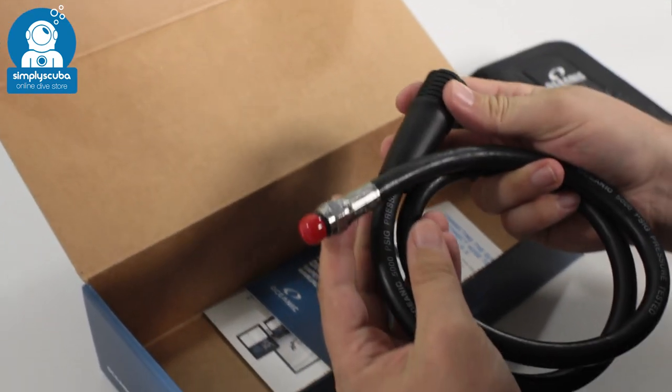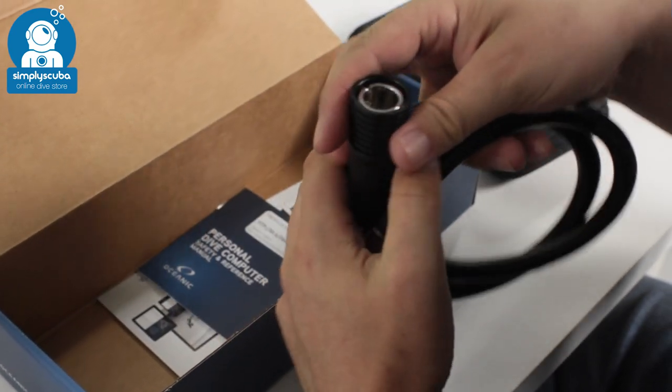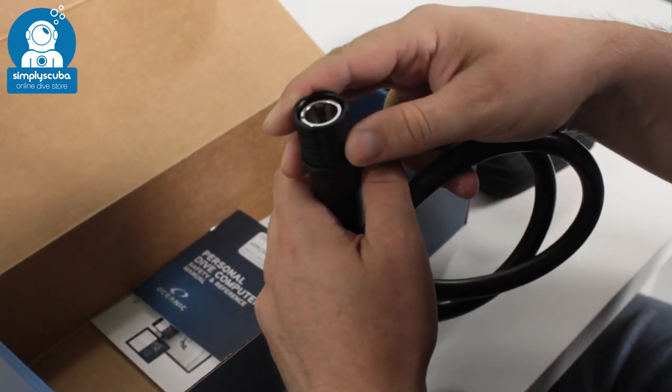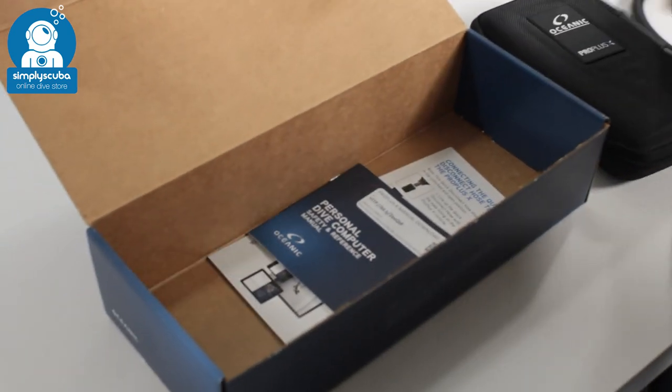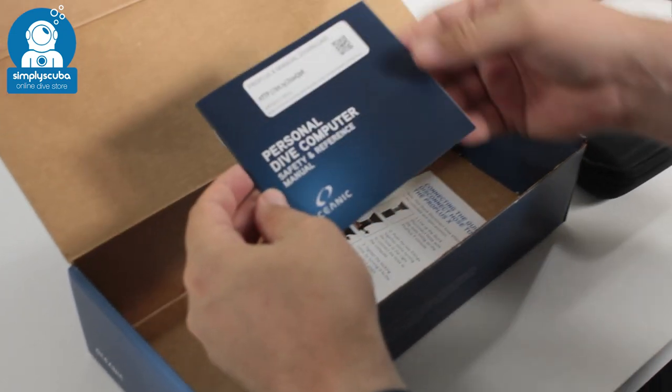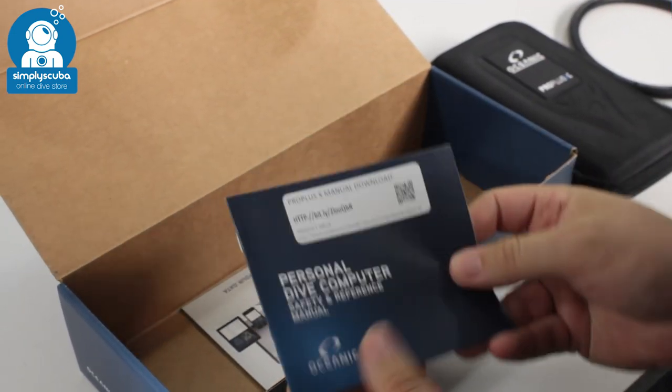In the box you get your quick-release high-pressure hose. This end will fit to your first stage and then you have a traditional bayonet style locking mechanism on that end. You also get safety and reference manuals, so the usual book of words.